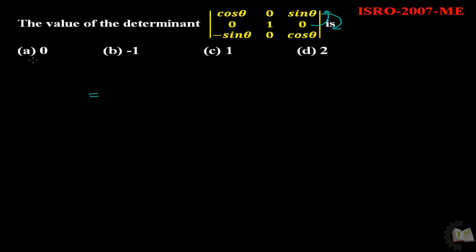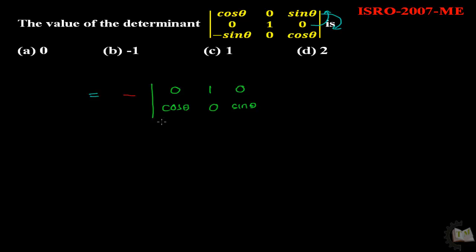It is very simple — just multiply a negative sign and write it down again. That will be: 0, 1, 0, cos theta, 0, sin theta. And this row will remain the same.